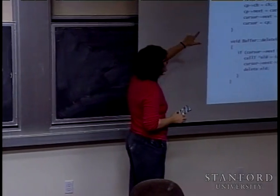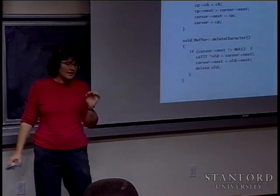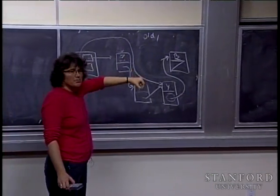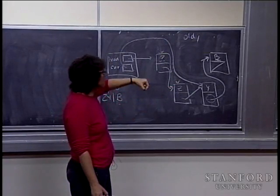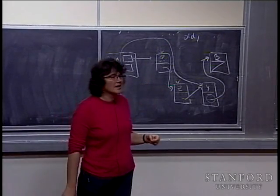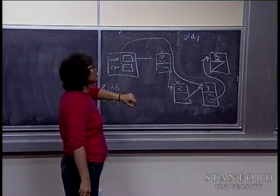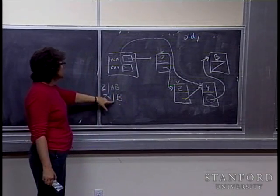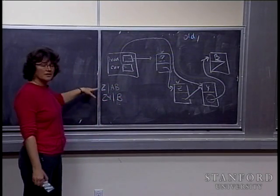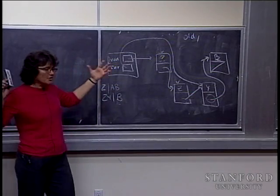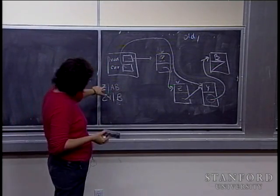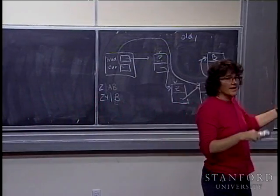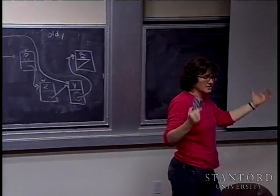Both insert and delete are O(1). This is where the linked list really shines: if you have access to the point where you want to make a modification, the linked list can do the rewiring in local context. Even if there are thousands of characters following or preceding the cursor, it doesn't matter — the larger context doesn't impact performance. It's just a local rearrangement of pointers. That's a real strength of the linked list: flexibility that doesn't rely on everything living in contiguous memory.